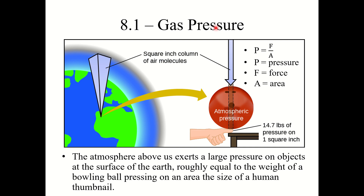For example, the Earth's atmosphere — we have something called atmospheric pressure, and this is just the sum of all the force that the molecules making up our atmosphere are exerting on us. The atmosphere above us exerts a pretty large pressure on objects at the surface of the Earth because there are a lot of gaseous particles pushing down on us.